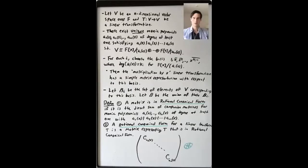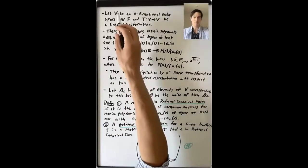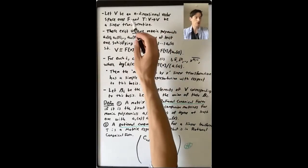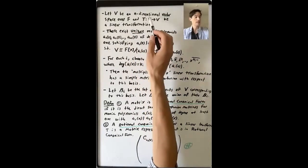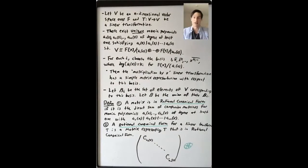We'll start this lecture by reviewing some things that we learned last lecture about rational canonical form. The setup is that V is an n-dimensional vector space over F, some field, and T is a linear transformation from V to itself.